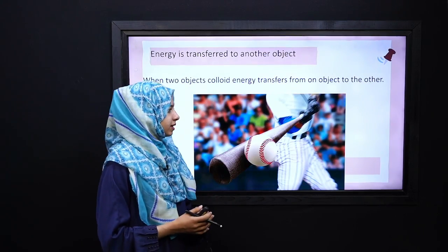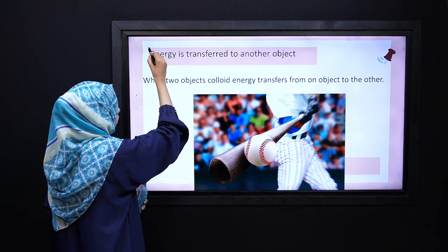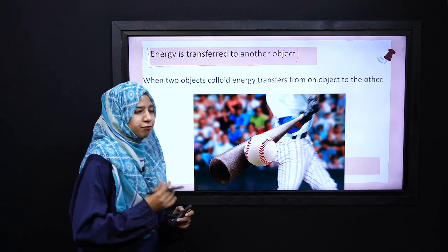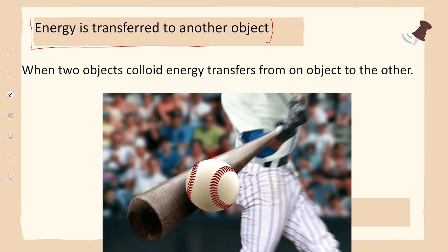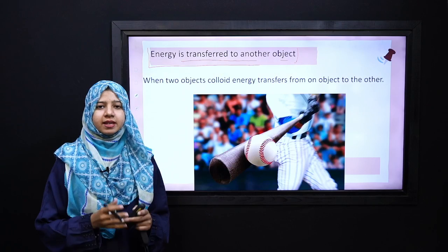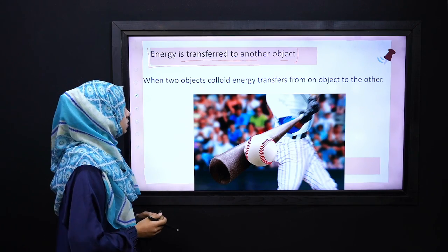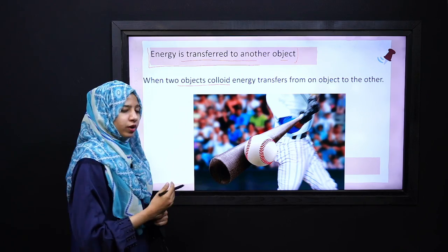So ye hamare paas statement hai law of conservation of energy ki. Different examples ke zariye se hum is ko discuss karte hain. Lekin sab se pahle hum apni is definition ko do different parts mein divide karke behtar tariqe se samajhte hain. First part jo hai: energy hamare paas create aur destroy nahi hoti — it is transferred to another object. First case: energy is transferred to another object — when two objects collide, energy transfers from one object to the other.